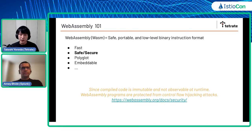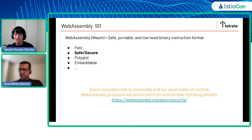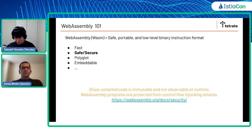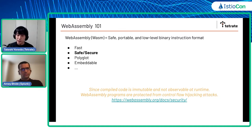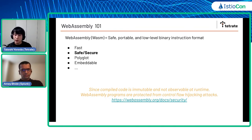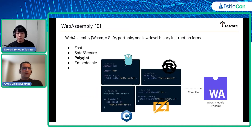The second characteristic, and most important for Istio or anyone dealing with production programs, is that WebAssembly is safe and secure. According to the WebAssembly website, compiled code is immutable and not observable at runtime. Basically, the WebAssembly program is placed in a safe sandbox and is not observable by the running WebAssembly process — totally different from a native OS where you can observe any memory address of a process. That's why you cannot modify a WebAssembly program at runtime, meaning you cannot hijack a running process.